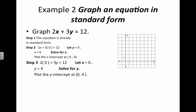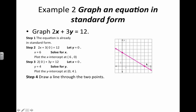Then we let x equal 0: 2 times 0 plus 3y equals 12, so 3y equals 12 and y equals 4. We plot the y-intercept at 0, 4. Then we connect the dots — here's our 6, 0, here's our 0, 4, and we draw a nice line through the two points.